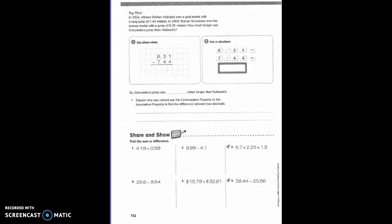In 1924, William DeHart Hubbard won a gold medal with a long jump of 7.44 meters. In 2000, Ramon Shurinko won the bronze medal with a jump of 8.31 meters. How much longer was Shurinko's jump than Hubbard? So in this case, we just did place value. So what do we do first? Bring down our decimal.